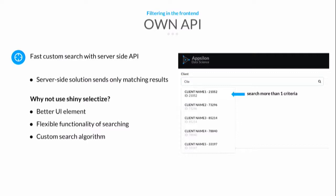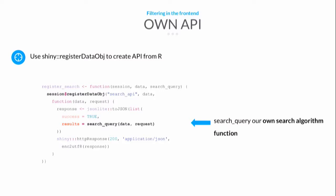Another problem was filtering in front-end elements, so we had to go for a server-side solution and build our own API. You might ask why we didn't use Shiny selectize for that — three reasons: we wanted a nicer UI, we wanted to give users more flexibility to search (a user can search on both client name and client ID in the same field), and we wanted a custom search algorithm at the back to further optimize performance.